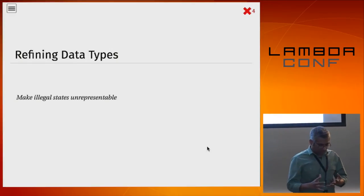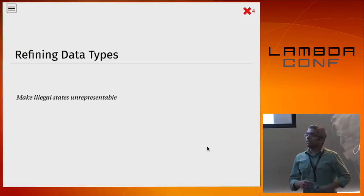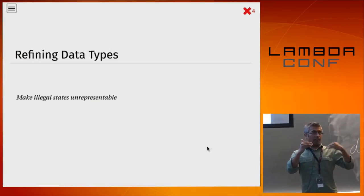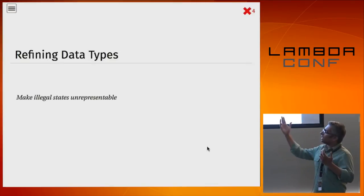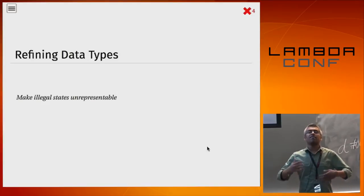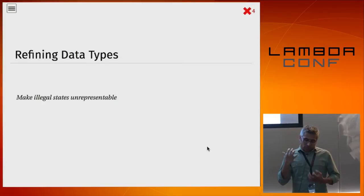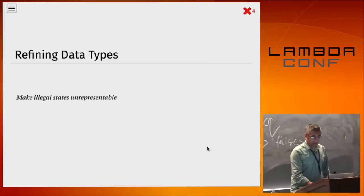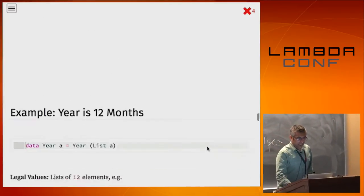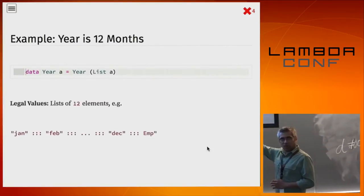Since I just showed you list-any, let me make a brief digression. There's a very nice slogan: making illegal states unrepresentable. Often you have invariants on your data and you'd like to define your type so it's impossible to construct invalid values — those which do not satisfy some desired invariant.